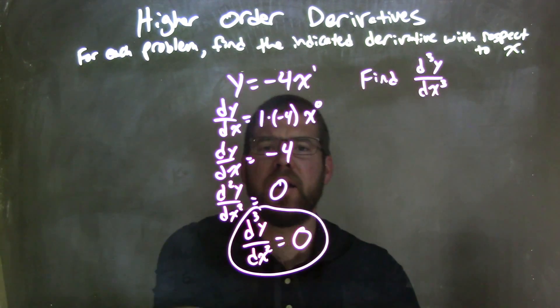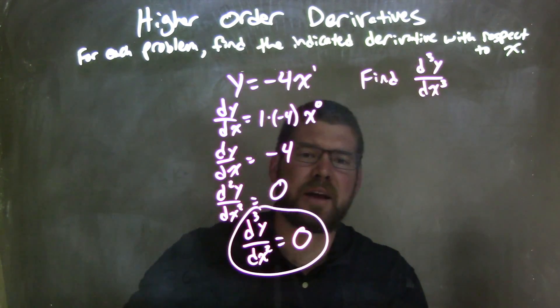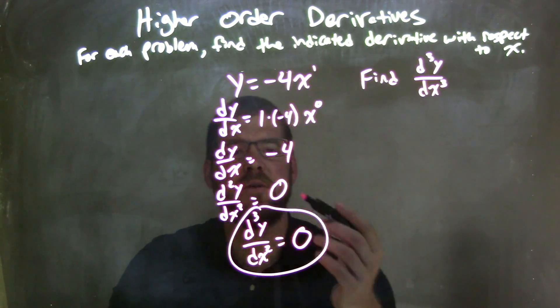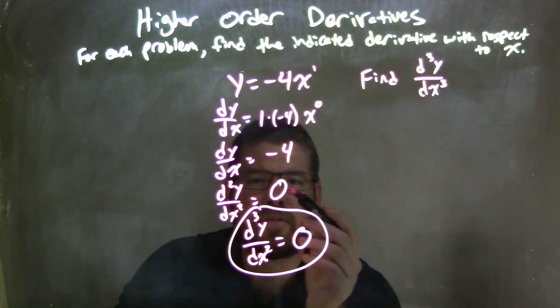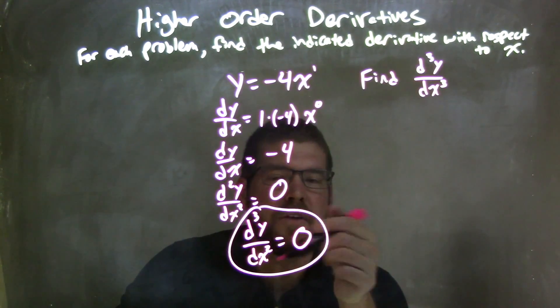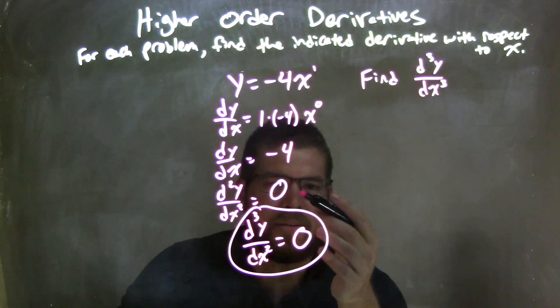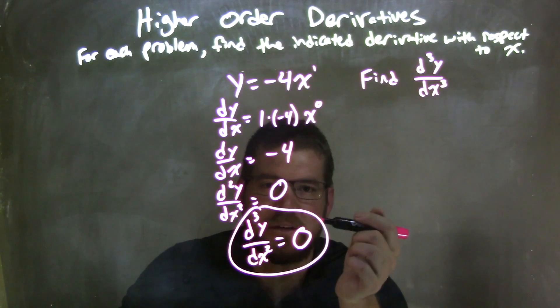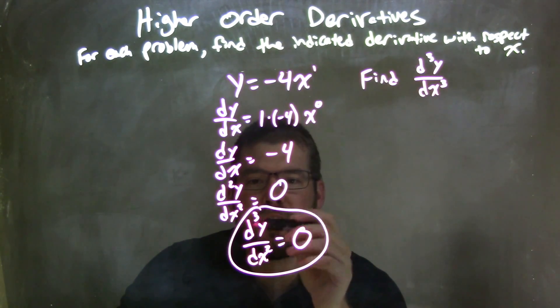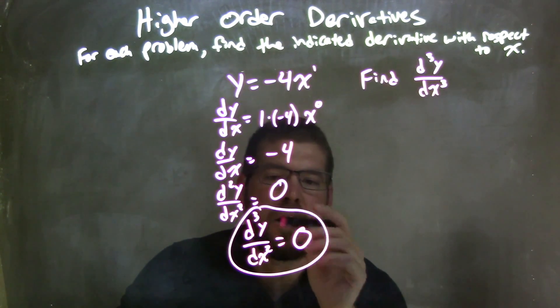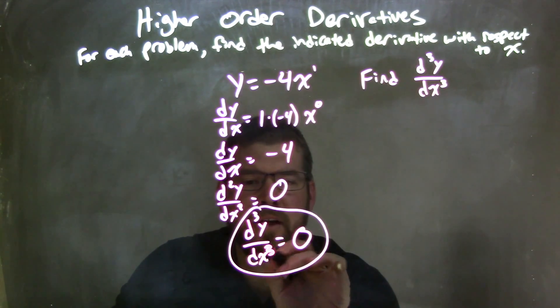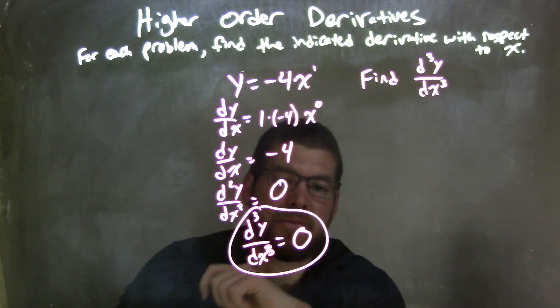Take the second derivative from there. Since this is a constant, the derivative of a constant is 0. And from there on out, every derivative we take is just going to equal 0 because we're taking the derivative of a constant. So our final answer is d³y/dx³ equals 0.